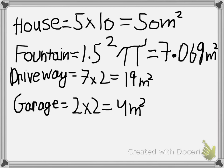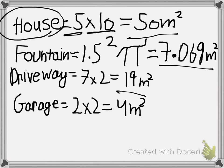Step 4: We now multiply the lengths to get the area for each of these individual items. The house is 50 meters squared, the fountain is 7.069 meters squared, the driveway is 14 meters squared, and the garage is 4 meters squared.